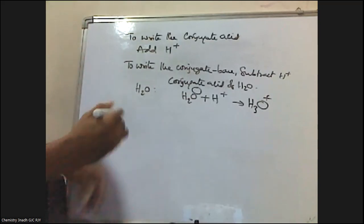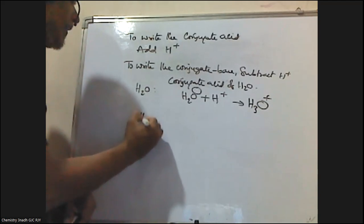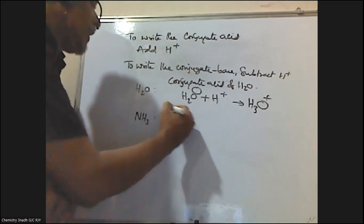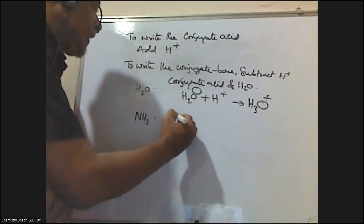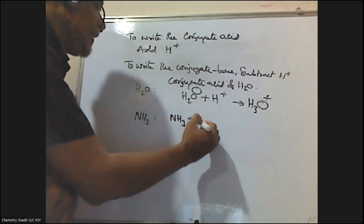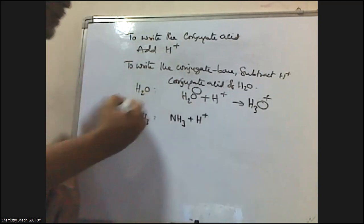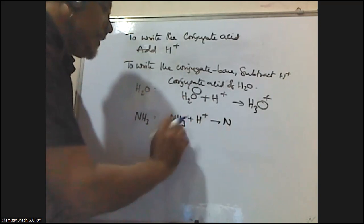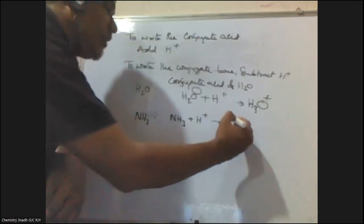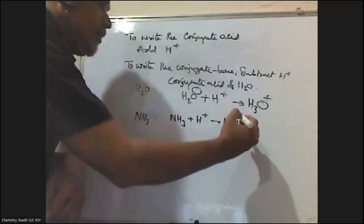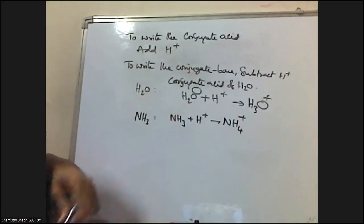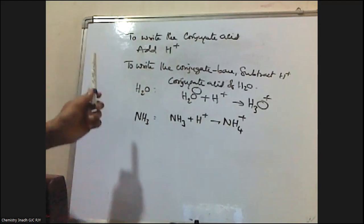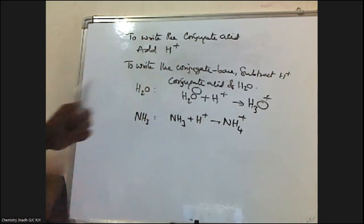Let me take one more example. If you take NH3, the Conjugate Acid of NH3 is obtained by adding H⁺. NH3 has three hydrogens, plus one more hydrogen gives four hydrogens. The charge on NH3 is zero, plus one from H⁺ becomes plus one. So the Conjugate Acid of NH3 is NH4⁺.